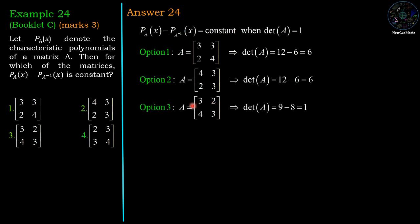Third option [[3, 2], [4, 3]], determinant value is 9 minus 8 which is 1. So it is the correct option.